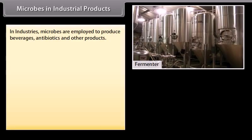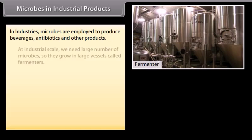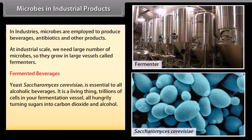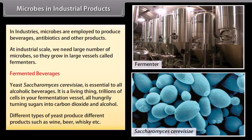Microbes in industrial products. In industries, microbes are employed to produce beverages, antibiotics, and other products at industrial scale. We need large numbers of microbes, so they grow in large vessels called fermentors. Fermented beverages: Saccharomyces cerevisiae is essential to all alcoholic beverages. Trillions of cells in a fermentation vessel hungrily turn sugars into carbon dioxide and alcohol. Different types of yeast produce different products such as wine, beer, and whiskey.